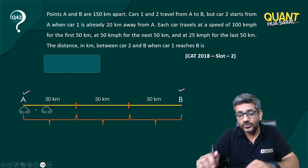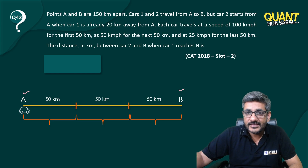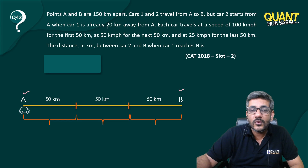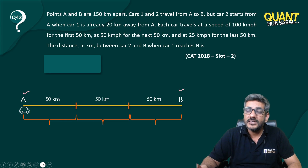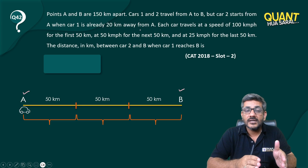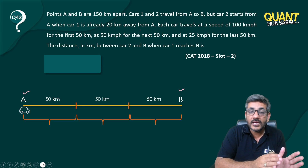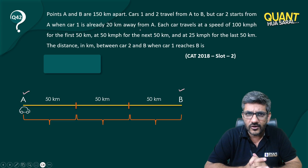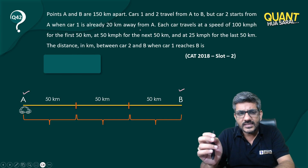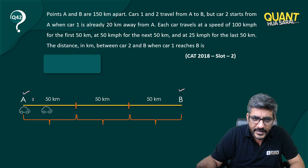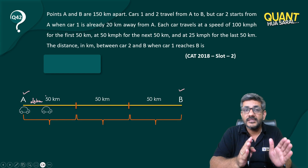Car two starts from A when car one is already 20 kilometers away from A. So car two starts when car one has already covered some distance, and that distance is 20 kilometers. Car one has already traveled this 20 kilometers at that time.